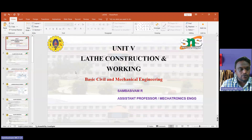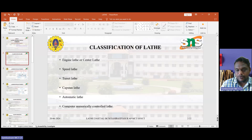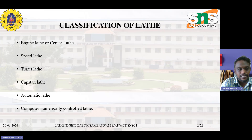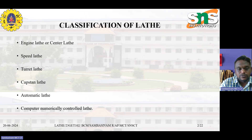Today we are going to discuss about lathe. Before going into the topic, I would like to discuss the different types of lathe we are covering in the classes. The first one is an engine lathe, second is speed lathe, turret lathe, capstan lathe, automatic lathe, and computer numerical control lathe. These are some of the different types of lathe used in common production industries.